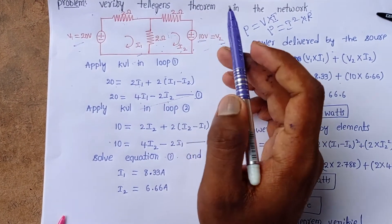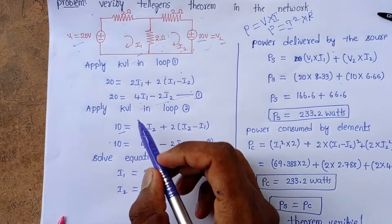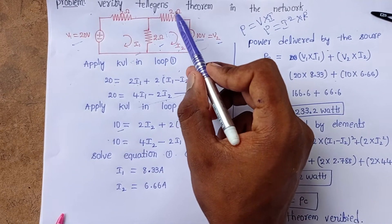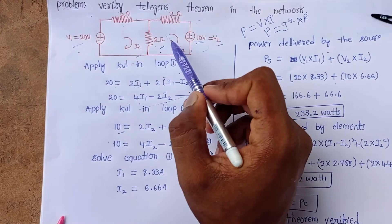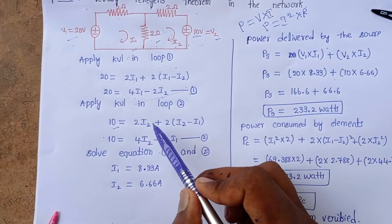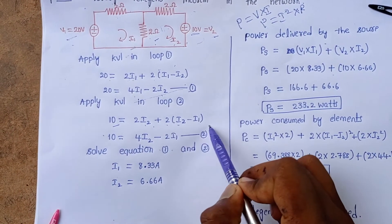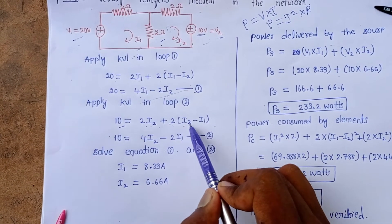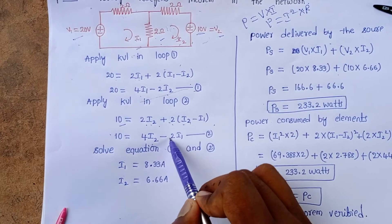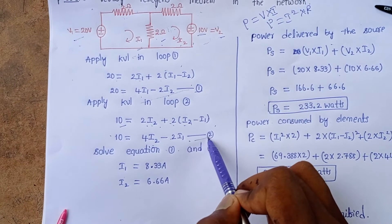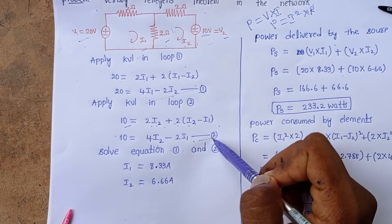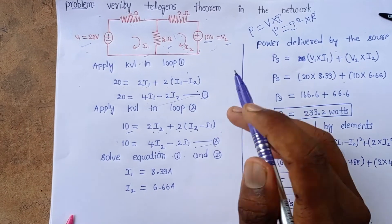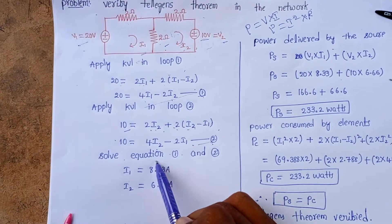Applying KVL in the second loop: voltage rise equals 10 V. 10 = 2(I2 − I1) + 2I2, which simplifies to −2I1 + 4I2 = 10. This is equation two. We now have two equations and can solve for the unknown currents I1 and I2.